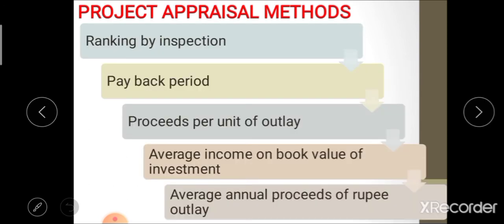Under undiscounted measures of project appraisal, there are five major methods: ranking by inspection, payback period, proceed per rupee of outlay, average income on book value, and average annual proceed per rupee of outlay. We will see each of these methods one by one in detail.